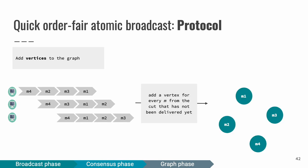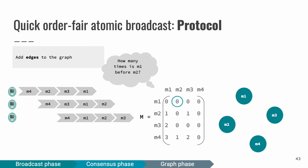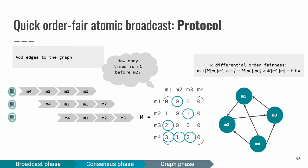In the new round of the protocol, our cut is extended, so now we have more information about the order of the messages. Now we repeat the same steps. We add vertices first, then we construct a new matrix M, counting how many times is one message before another. Again, we apply conditions for kappa differential order fairness for adding an edge. We apply condition for every pair of messages and add necessary edges. Now the graph is much simpler without edges in both directions.